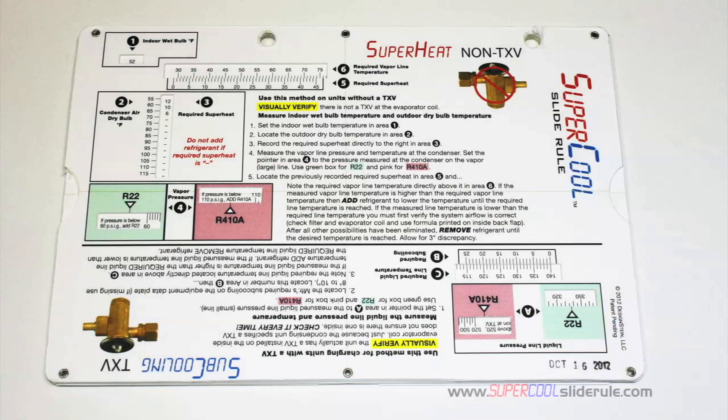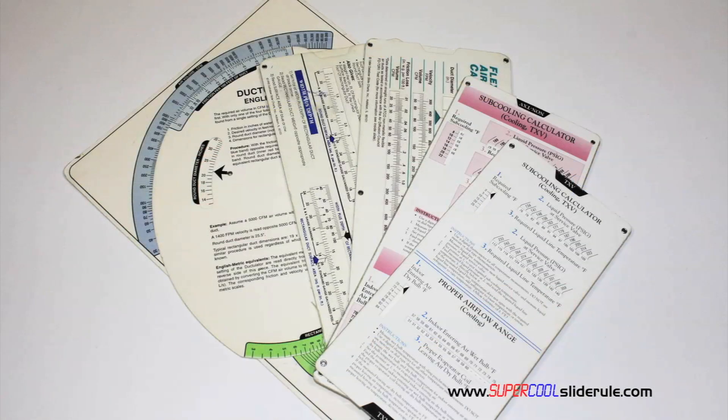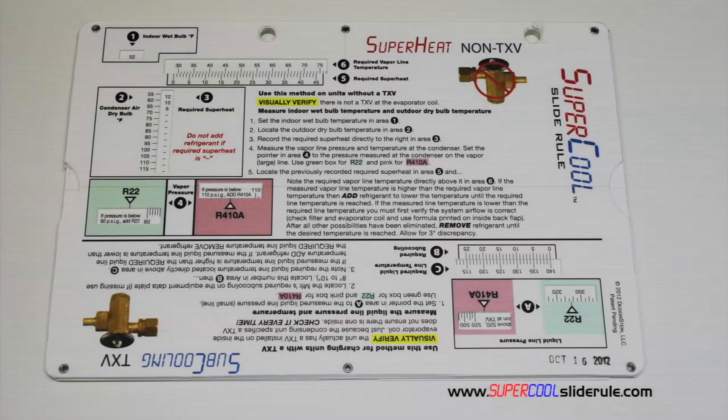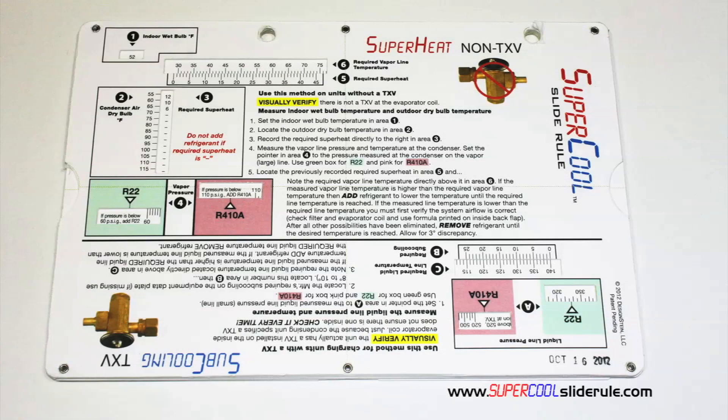Hello. I would like to take a minute to introduce you to the coolest tool in the HVAC industry. Historically, technicians have carried four or five different slide rules — one for R22, one for R410A, one for metal duct sizing, one for flexible duct sizing, and yet others for diagnostics or troubleshooting. Thankfully, those days are gone.